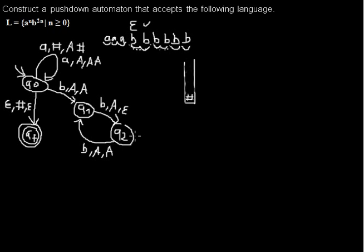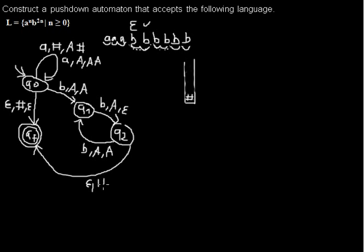We are not done yet because we want to go to the final state and empty our stack. So I add another arc to our final state where I read nothing, pop the stack bottom symbol, and don't push anything back. And that is one possibility of doing this, but there are many more.